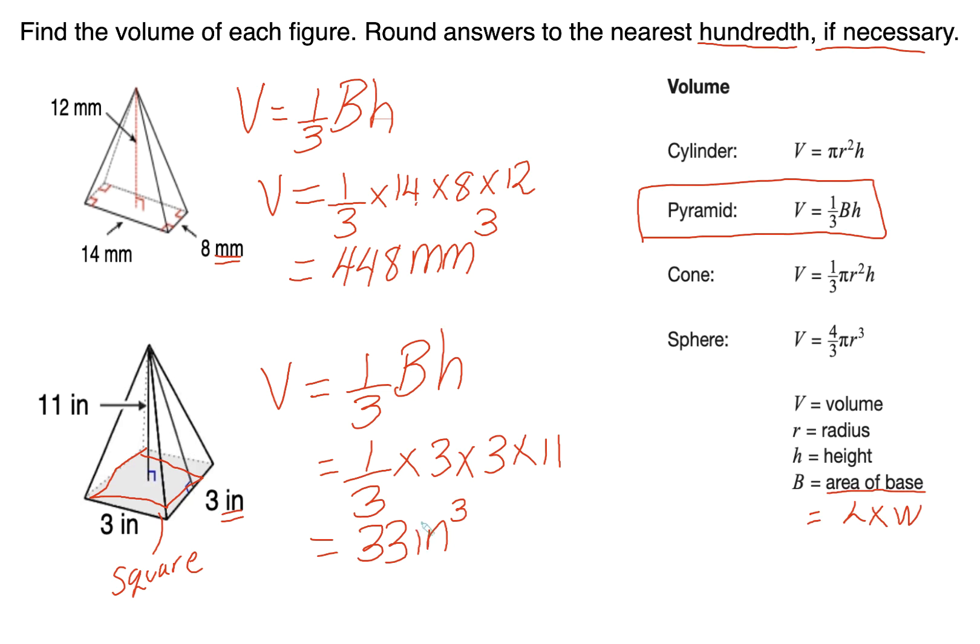If you were on the non-calculator and you had to solve this, what I would do is I would take the numerator section. So this is what you have to multiply. I would multiply everything at the top. Let's start with the 1. 1 times 3 is 3. 3 times 3 is 9. 9 times 11 is 99 divided by 3 and you get 33. I hope this has been helpful. Good luck on your TAKS examination.